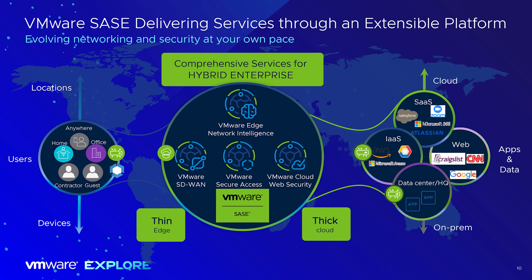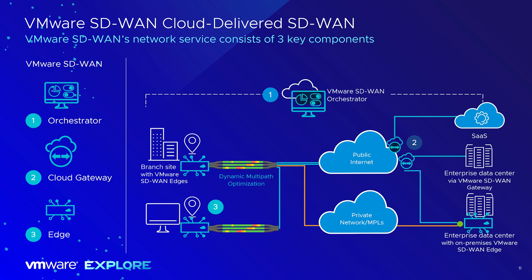This is where VMware's SASE and SD-WAN solutions come in and provide a unified architecture. We have four main components: our SD-WAN, which we'll cover in lab 2440-01; secure access and cloud web security in lab 2441-01; and it all ties together in our VMware SASE portfolio. You're looking at any location, any user, any device accessing on-prem or cloud applications using our edge device, with gateways to tie in data center services and stitch together a fabric via our orchestrator.